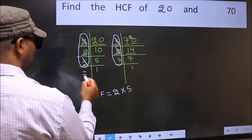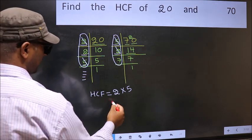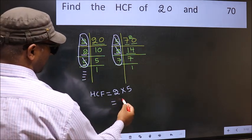No more numbers have been left out. So our HCF is 2 into 5. 10 is our HCF.